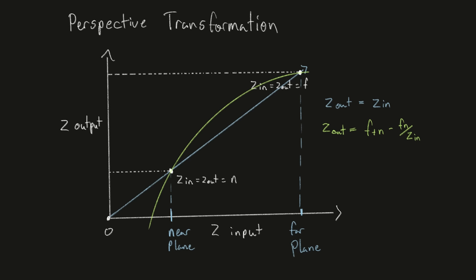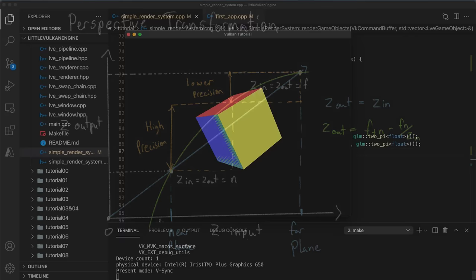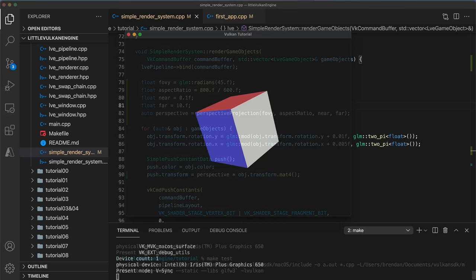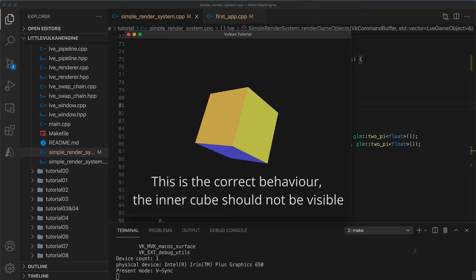An advantage to having the z depth values be non-linear is that calculations at the near plane will be higher precision than calculations at the far plane, reducing observable z-fighting. Z-fighting, also known as stitching or depth fighting, occurs when two surfaces are very close together. This visual artifact is caused by the rounding errors of floating point calculations, and can be avoided by reducing the distance between the near and far planes. Now back to the perspective matrix.